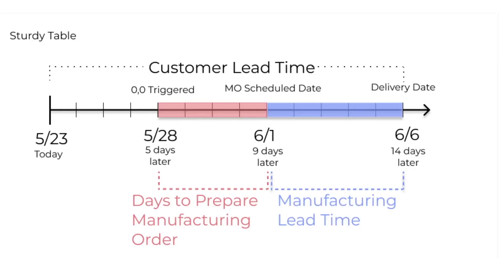So in summary: the 14-day customer lead time is a default timeline for producing a sturdy table. Five days from when we've placed a sales order, we get an alert on the replenishment report to create a manufacturing order. This triggers zero-zero to get our parts from the vendor, which arrives on the ninth day, June 1st. This date is also the scheduled date on the MO — the last day to begin manufacturing the sturdy table to ship it on time, on June 6th.